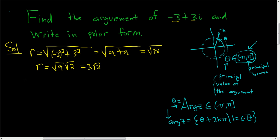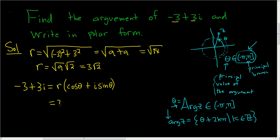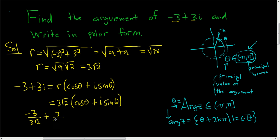To find the argument, I write down the complex number again and set it equal to its polar form: r times (cosine theta plus i sine theta). Since r is 3√2, we have negative 3 plus 3i equals 3√2 times (cosine theta plus i sine theta). Dividing everything by 3√2 gives negative 3 over 3√2 plus (3 over 3√2)i equals cosine theta plus i sine theta.